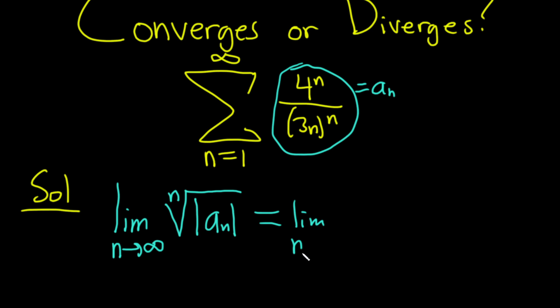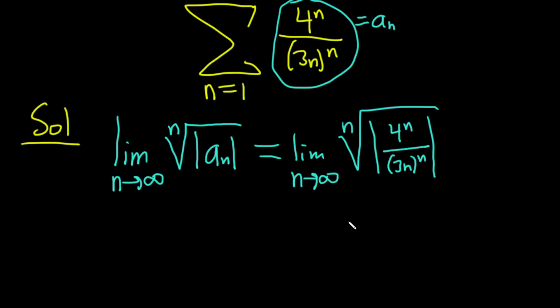So this is the limit as n approaches infinity of the nth root of the absolute value of 4^n over (3n)^n. Let's start by removing the absolute value. We don't need it. Everything here is positive.